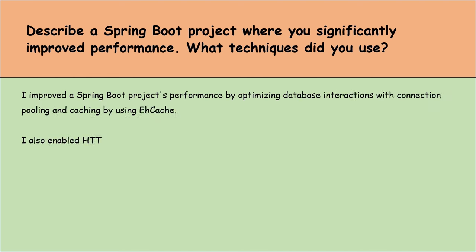Explain the concept of Spring Boot's embedded servlet containers. Spring Boot has an embedded servlet container feature, which means it has a web server like Tomcat, Jetty, or Undertow built right into the application. This allows us to run web applications directly without setting up an external server — a big time saver for development and testing, since we can just run our application from our development environment or through a simple command. This embedded approach simplifies deployment too, as our application becomes a standalone package, eliminating the need for separate web server configuration.